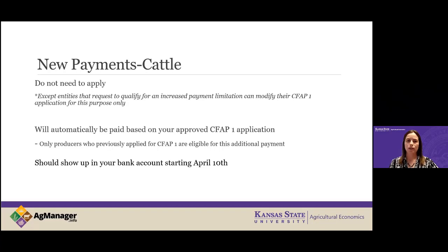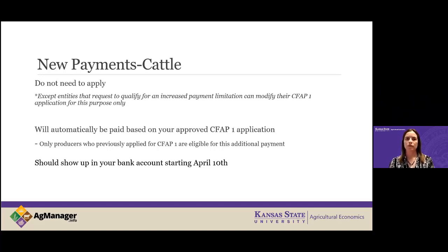Another question: how do you know if your CFAP 1 was completed accurately — if you didn't remember how you lumped your cattle into classes for the $33 payment? Todd answered: if you don't have a copy of your original CFAP 1 application, you could also check your estimated payment calculator report provided at the time of CFAP 1 application — that would indicate how you categorized those inventory cattle. Ultimately you'll need to work with your local service center office, as they have a copy of your application on file.